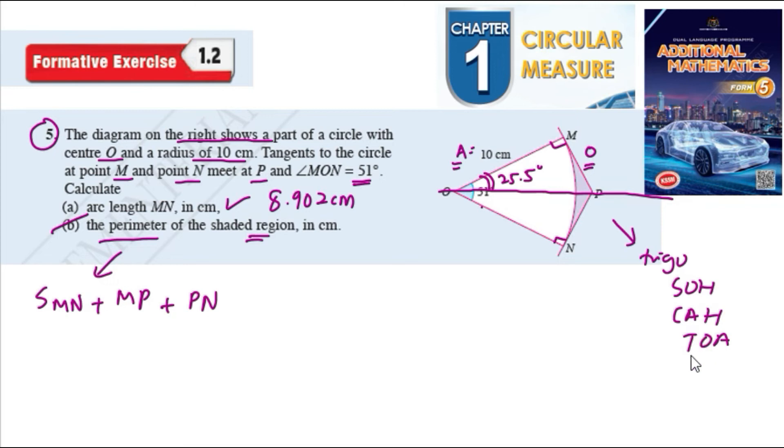So we know that tangent theta equals opposite over adjacent. So theta equals 25.5. So tangent 25.5 equals opposite, so opposite is MP, divided by adjacent is 10 cm. So MP equals 10 times tangent 25.5, which equals 4.770 cm.